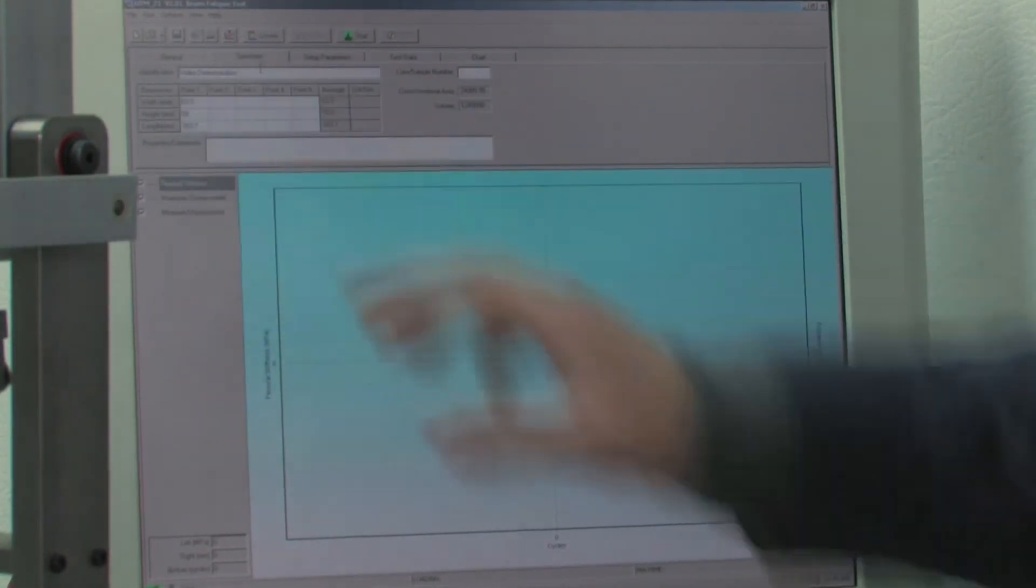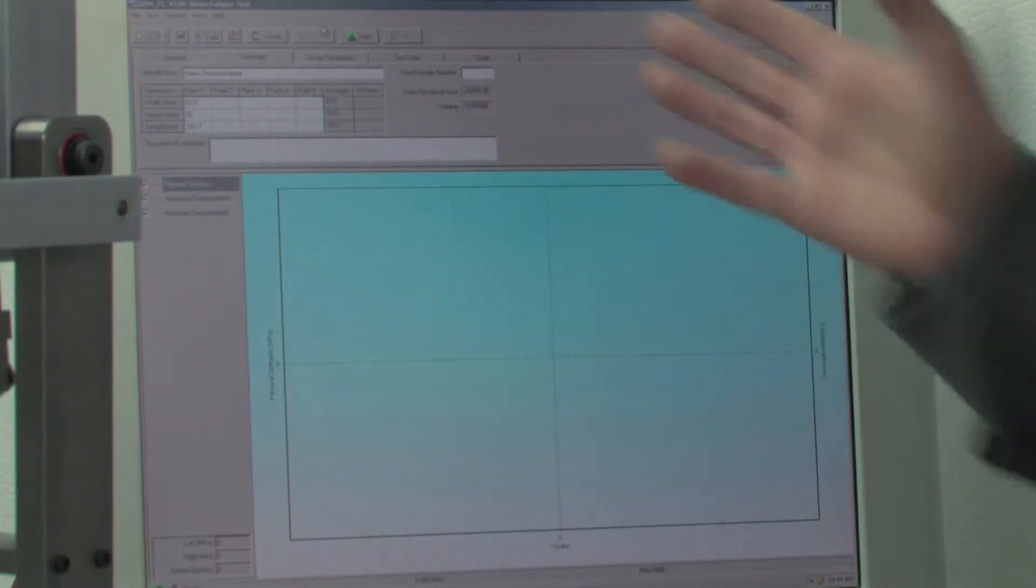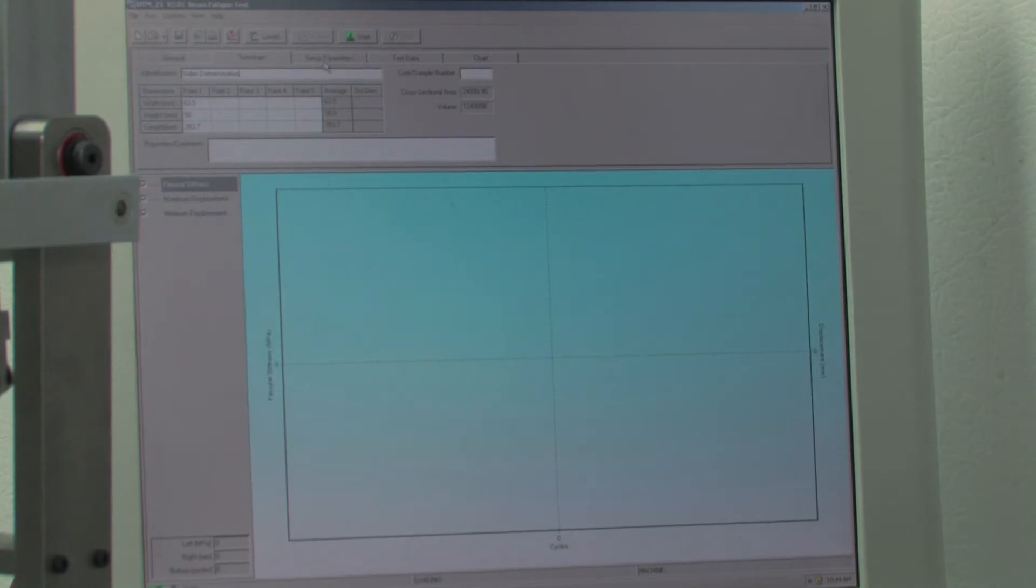In this case I have already entered it right here, and if you have several measurements you can enter several and the machine is going to average it out by itself.